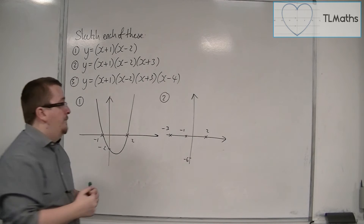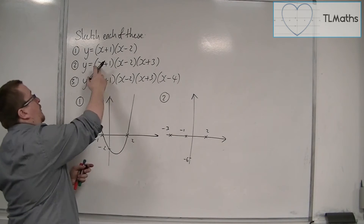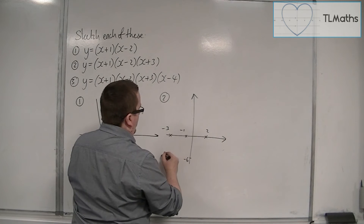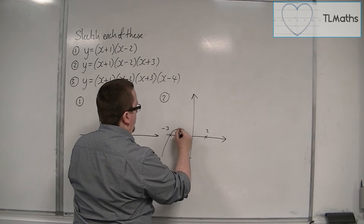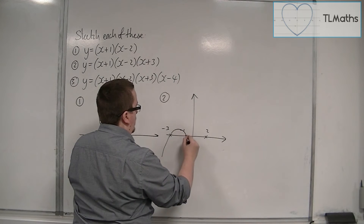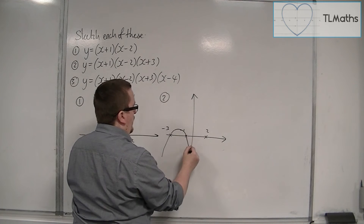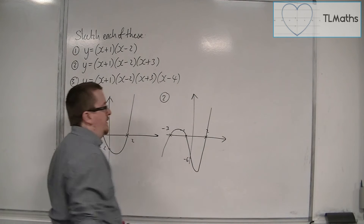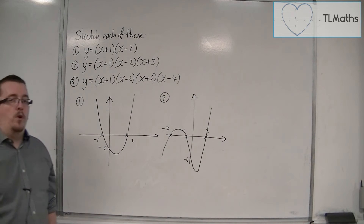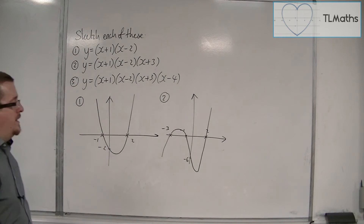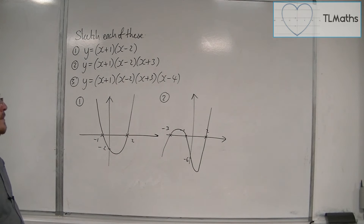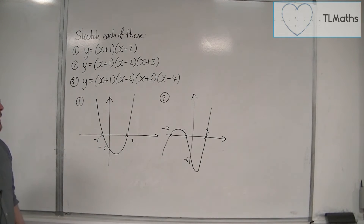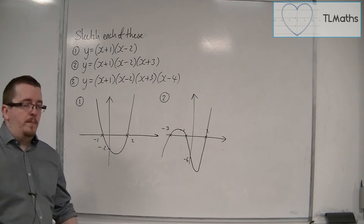Starting in the bottom left, because we have a positive x cubed, we must start in the bottom left, go through -3, through -1 on the x-axis, through -6 on the y-axis, and then turn and back on itself in order to go through 2 on the x-axis. So it would have to look something like that — that's the general shape anyway.